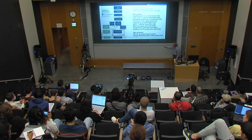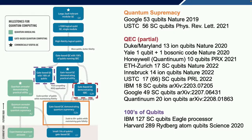Getting to larger hundreds-of-qubit devices: IBM has the 127-superconducting-qubit Eagle processor, and Harvard recently demonstrated 289 Rydberg atom qubits, which is somewhere between gate-level and not.